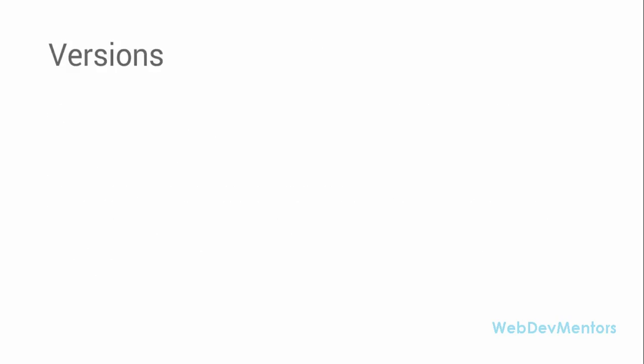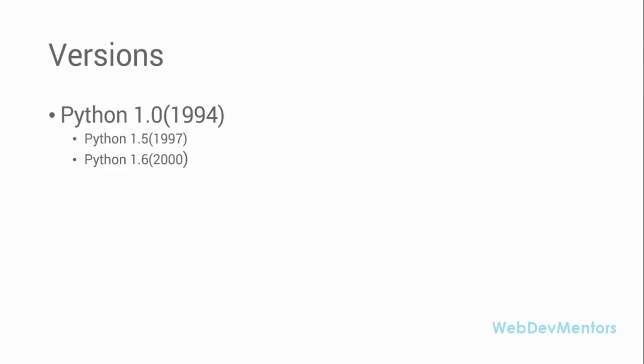There are a lot of versions that came with Python. Python started with version 0.9 when it was released in 1991 — it was not even 1.0. Python 1.0 was released in 1994. Python 1.0 itself has two sub-versions: 1.5 was released in 1997 and 1.6 was released in 2000, so it took about three years for each of these releases to happen.